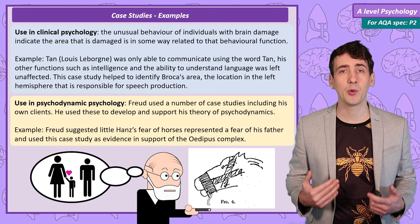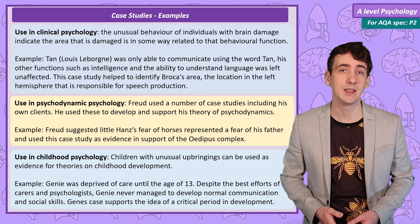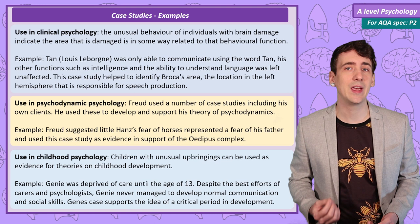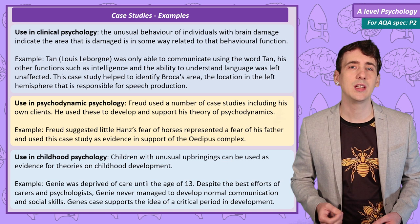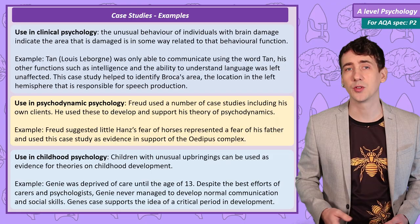Case studies of children of abnormal upbringings can be used to test ideas of childhood development. One famous example is the case of a child called Genie, who was severely deprived of care from infancy until thirteen. Even with the help of trained psychologists she was unable to develop beyond simple communication and struggled to behave appropriately. Genie demonstrated the importance of early years and critical periods of childhood in learning language and social skills.